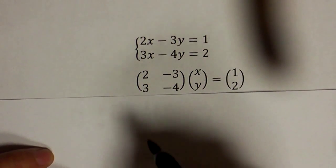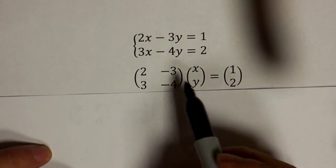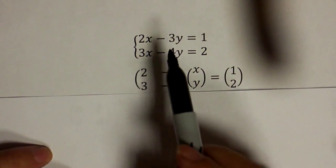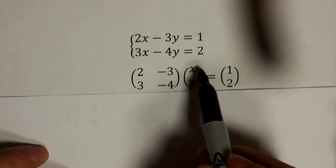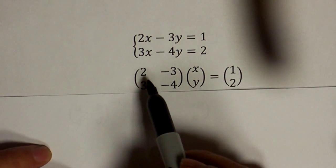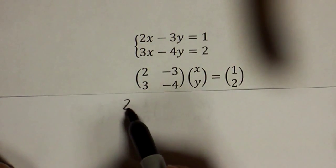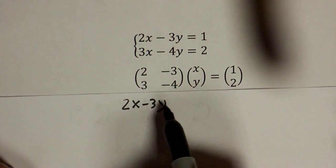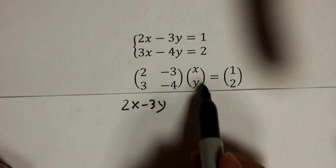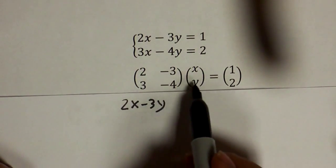To see why this matrix equation is the same as that, you have to calculate the left side. Let's calculate this left side: across down, that gives you 2x minus 3y, and then 3 times x and negative 4 times y.